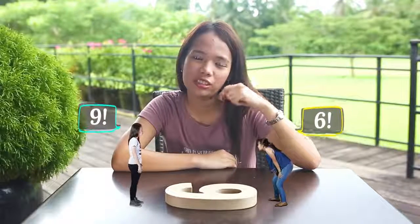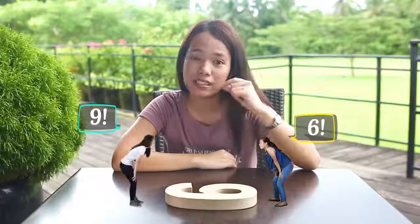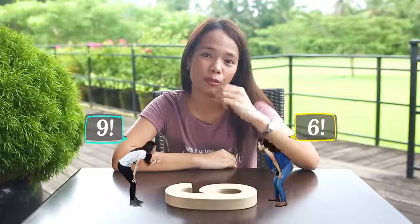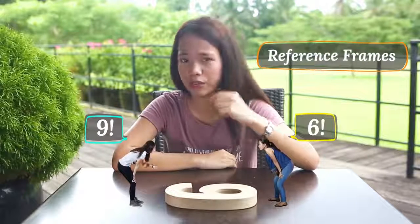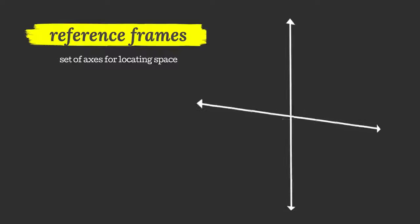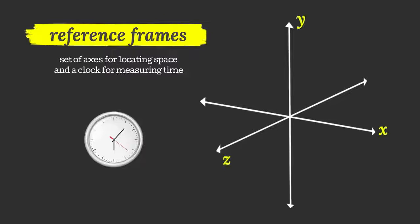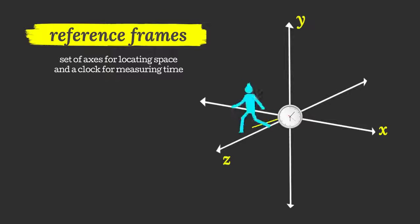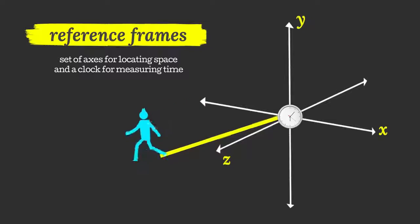They just saw it differently since they looked at it from different reference frames. What exactly are reference frames? These are just a set of axes for locating space and a clock for measuring time, relative to which you make observations.